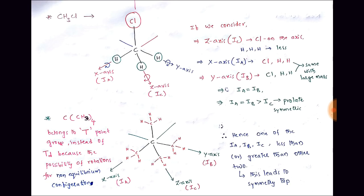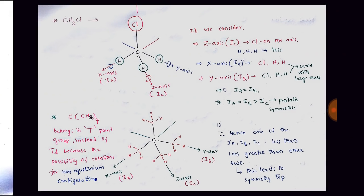For tetramethylmethane C(CH₃)₄, there is some complication. After researching many books, tetramethylmethane belongs to the T-point group instead of a full tetrahedral point group, because of the possibility of rotations for non-equilibrium configurations — slight rotations of the methyl groups are possible. This leads to it being a symmetric top molecule, with one axis where Ia, Ib, or Ic is less than or greater than the other two.